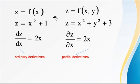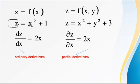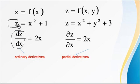Suppose we consider z as a function of x. For example, z is equal to x squared plus 1. If we differentiate z with respect to x, the derivative of x squared is 2x and the constant is 0. We use the notation dz by dx when differentiating z with respect to x. These types of derivatives are called ordinary derivatives.